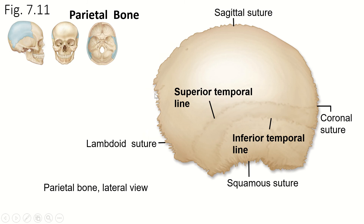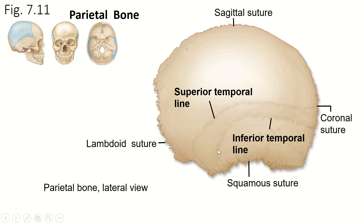Now the parietal bone — remember there are two parietal bones, one on the left and one on the right on the side of the head. The coronal suture goes on the front, sagittal on the top, lambdoid on the back, squamous suture on the bottom. The only markings I want you to know are the superior and inferior temporal lines. These are not on the temporal bone — they are above the temporal bone. They're arches kind of right here, and there's a muscle called the temporalis that goes from these lines and attaches here on the mandible and helps to open and close your jaw.